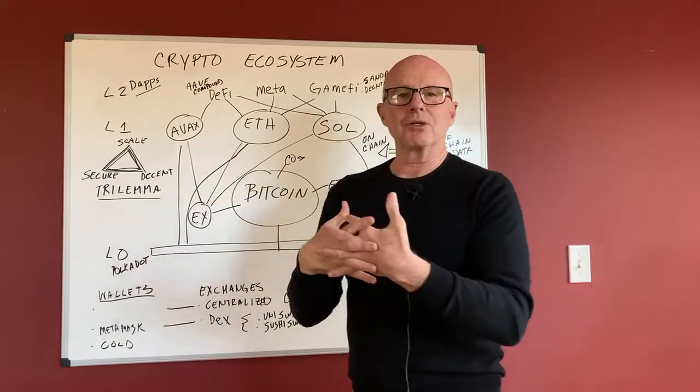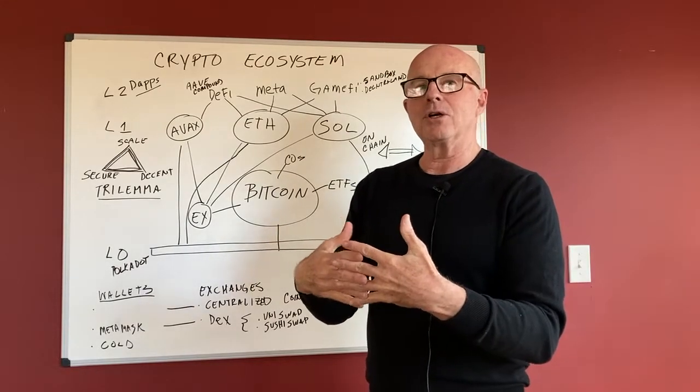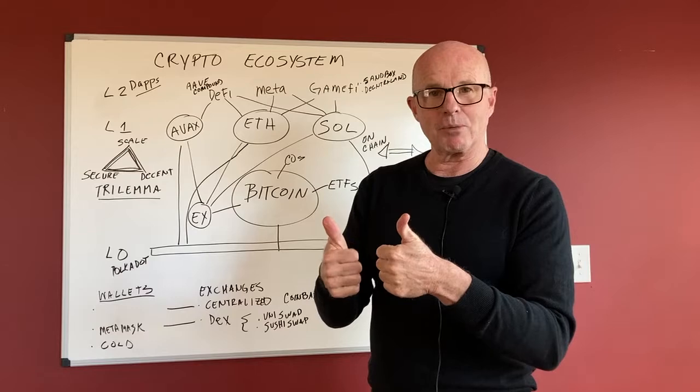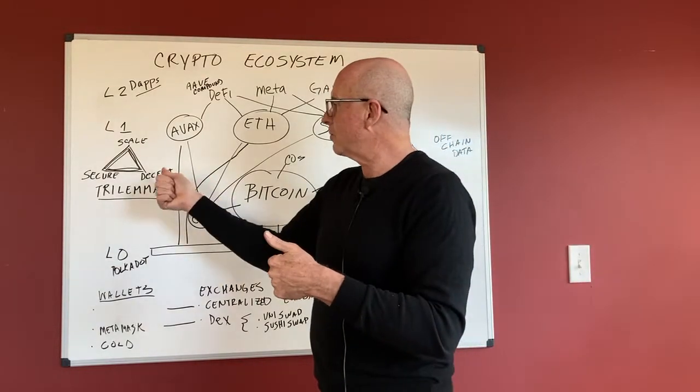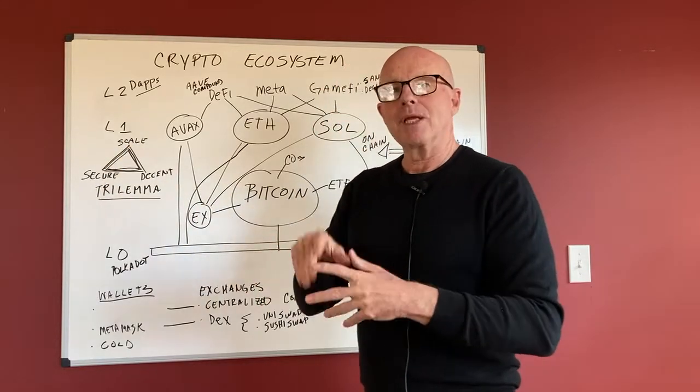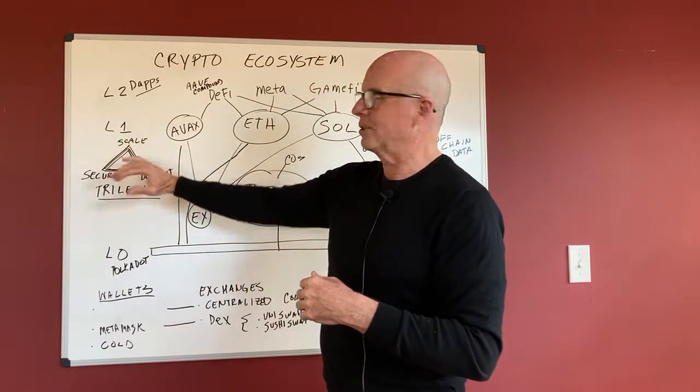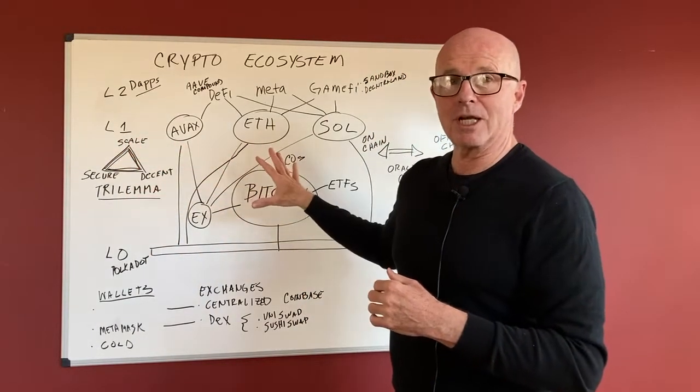It's sort of like Heisenberg's uncertainty principle in quantum mechanics, where you can't know the position and the velocity of a particle at the same time, because one influences the other. Each thing that you optimize for in this trilemma has limitations on the other ones. So this is the big problem with blockchains right now.